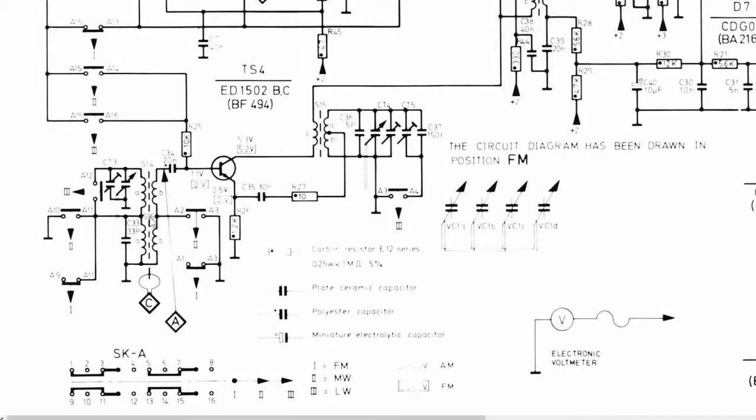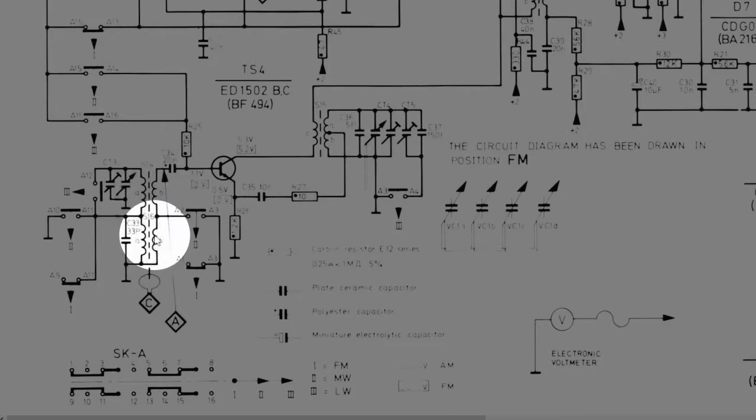What that does is takes this part - this is the ferrite rod here and the two coils on it. These coils are taken out when it's in medium wave, and these position two are on. Then when you go to long wave position three, these open up bringing this into circuit, and also bringing these two capacitors into the circuit. So I would hope that it's something relatively replaceable like these capacitors - maybe they're short circuit and that's why it's not working - and not that this coil is open circuit. But we'll just have to see.